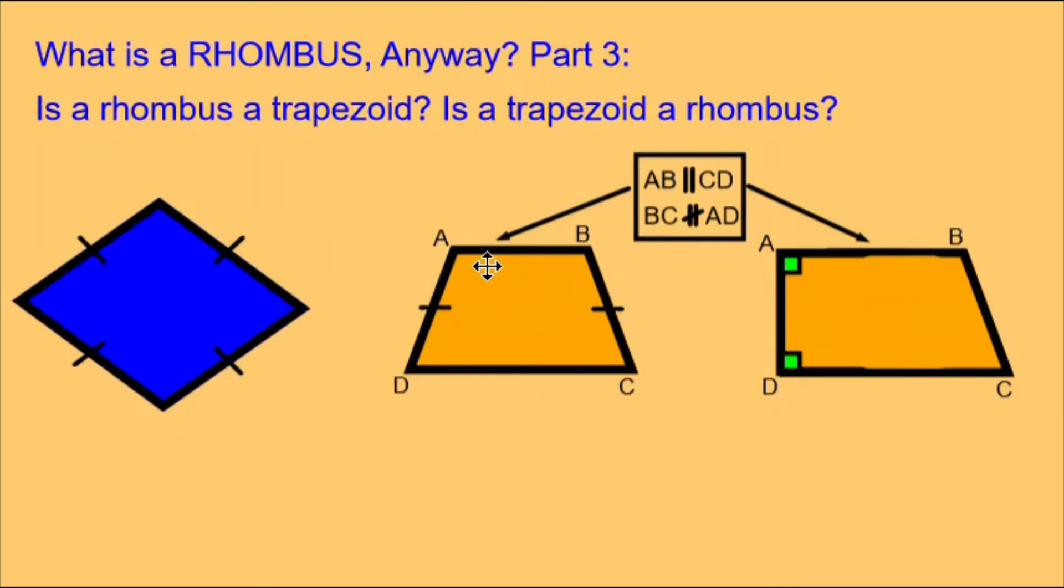We have information given that tells us that side AB is parallel to side CD, and that side BC is not parallel to side AD. This means that the leftmost of the two orange figures is an isosceles trapezoid.